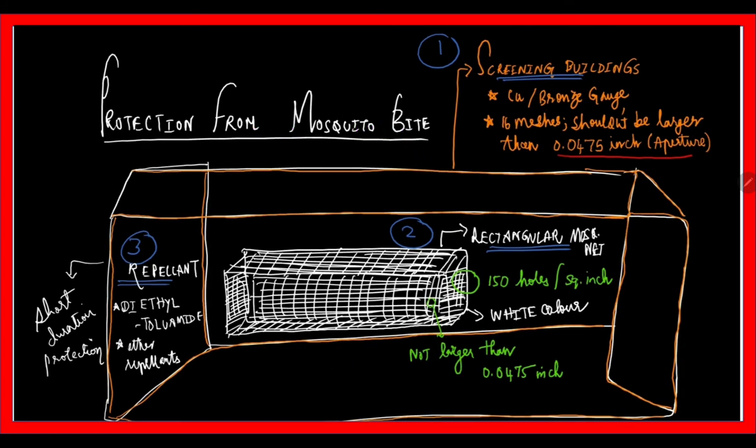Protection from mosquito bite includes screening buildings, mosquito nets, and repellents. Screening buildings use copper bronze with 16 meshes and aperture not larger than 0.0475 inches. This holds for mosquito nets also, which should be rectangular with 150 holes per square inch. The most efficient repellent is diethyltoluamide, especially against Culex fatigans. However, repellents have short duration of action.